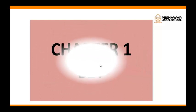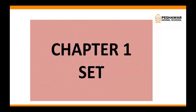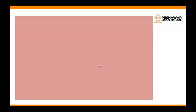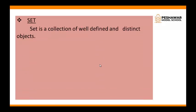Our first chapter is Set. First of all, let's study the definition of a set. Set is a collection of well-defined and distinct objects. I will explain what is the meaning of object, well-defined, and distinct.